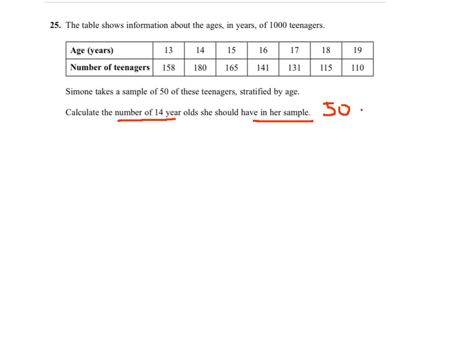What we know is that the proportion of teenagers aged 14 in her sample of 50 is equal to the proportion of teenagers aged 14 in the whole population of 1000 teenagers.